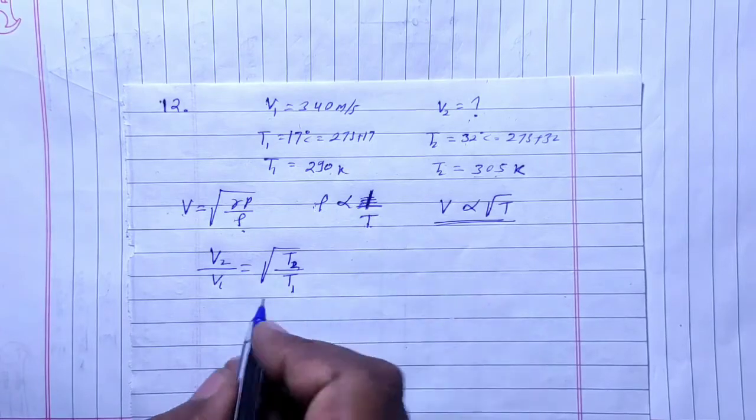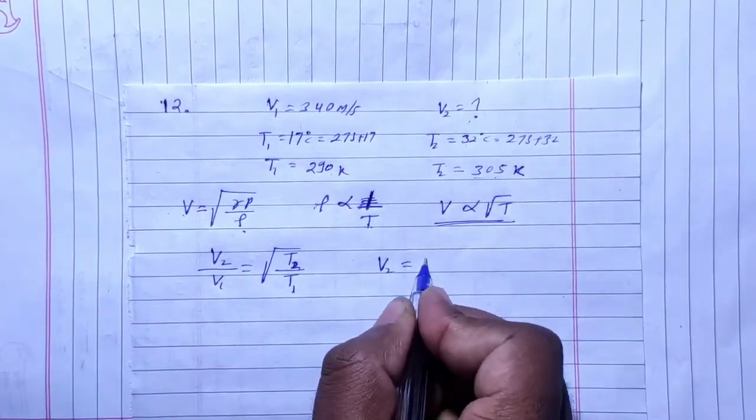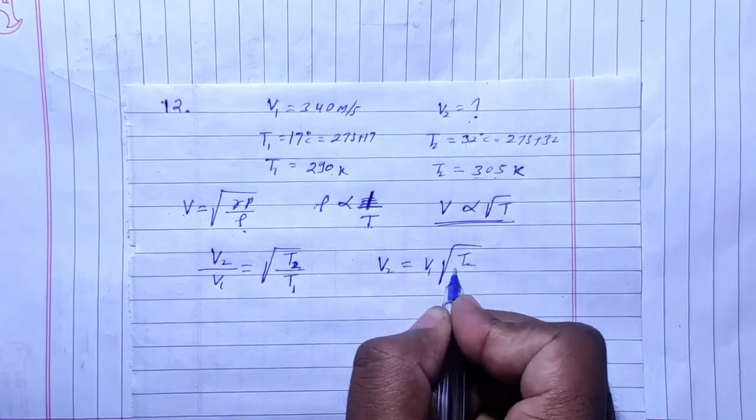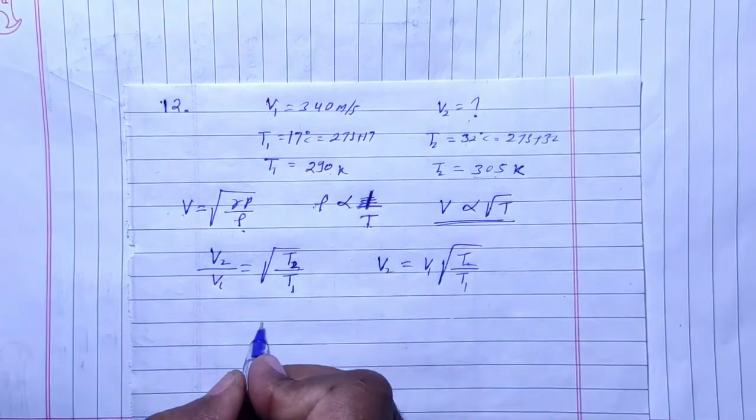So we need V2 to find. V2 is equal to V1 into the root of T2 by T1. Right?